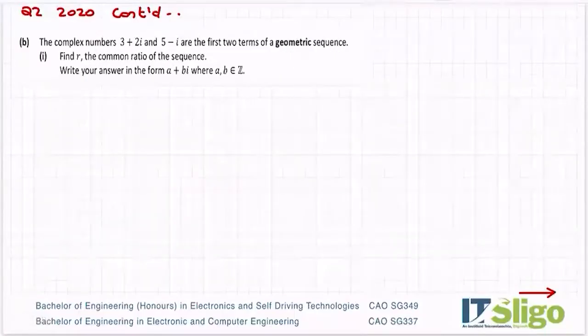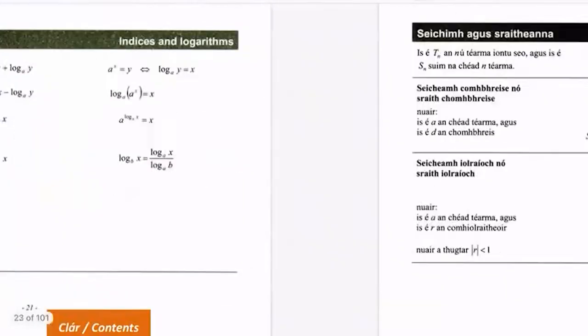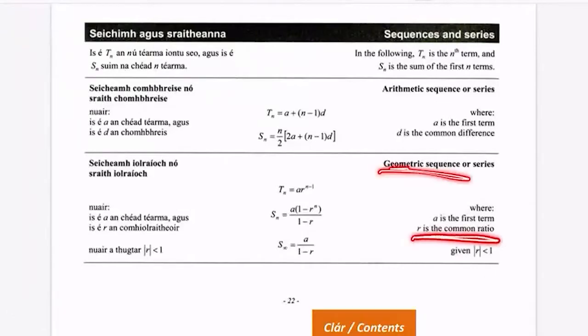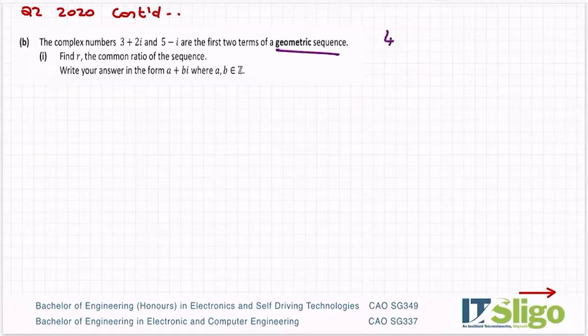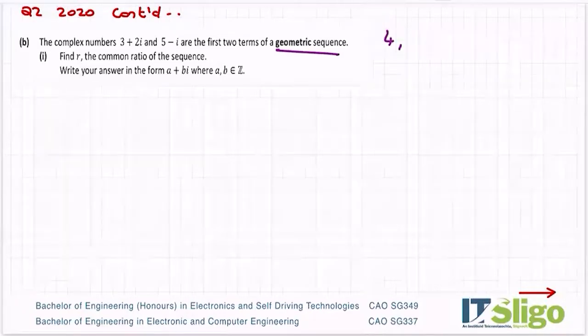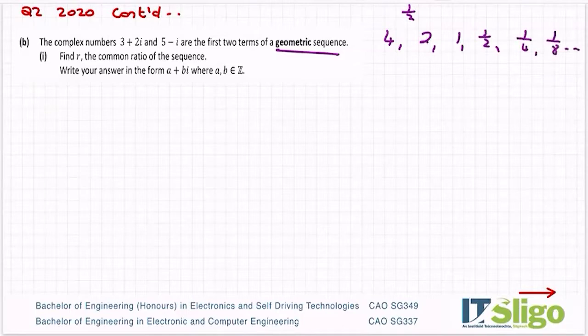Part B. The complex numbers 3 plus 2i and 5 minus i are the first two terms of a geometric sequence. Find r, the common ratio of the sequence. So it's a geometric sequence where r is the common ratio. A geometric sequence is multiplying by a number. So maybe if I multiply by a half, for example: 4, 2, 1, a half, a quarter, an eighth, and so on. That is a geometric sequence, one where you multiply by what's called a common ratio every time.